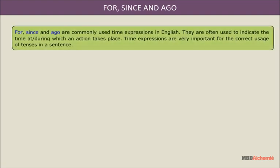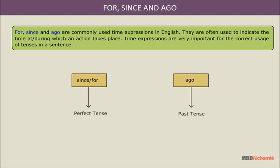For, since, and ago are commonly used time expressions in English. They are often used to indicate the time at or during which an action takes place. Time expressions are very important for the correct usage of tenses in a sentence. Since or for is used for perfect tenses. Ago is used with the past tense.